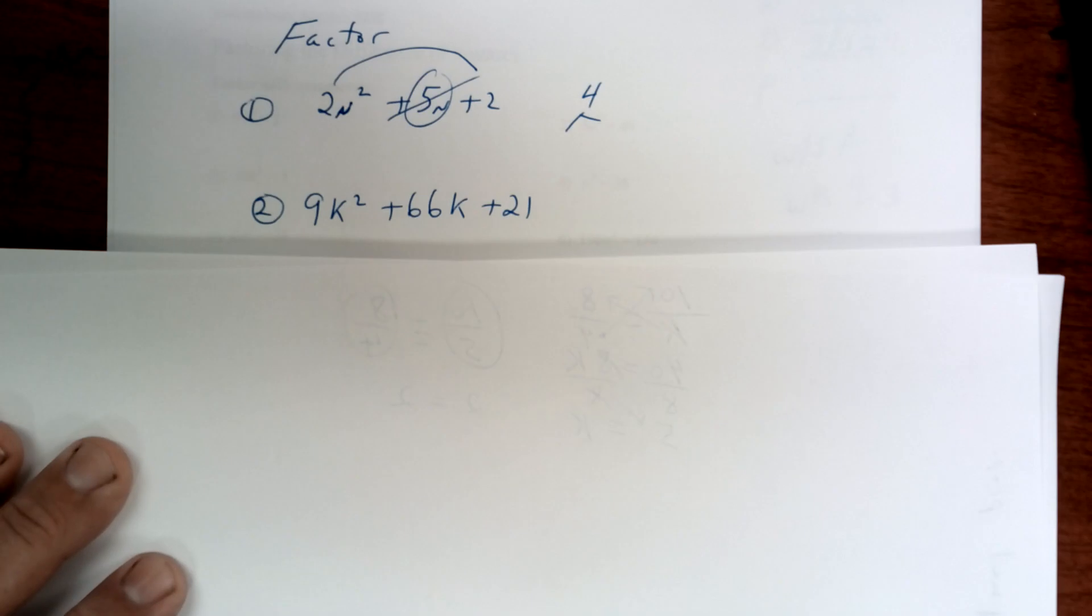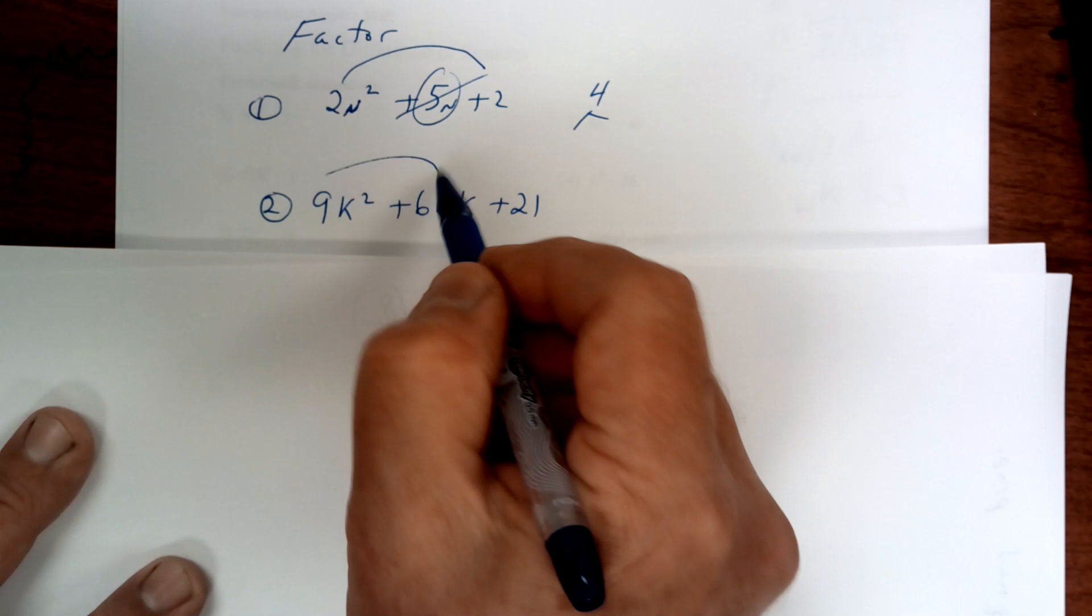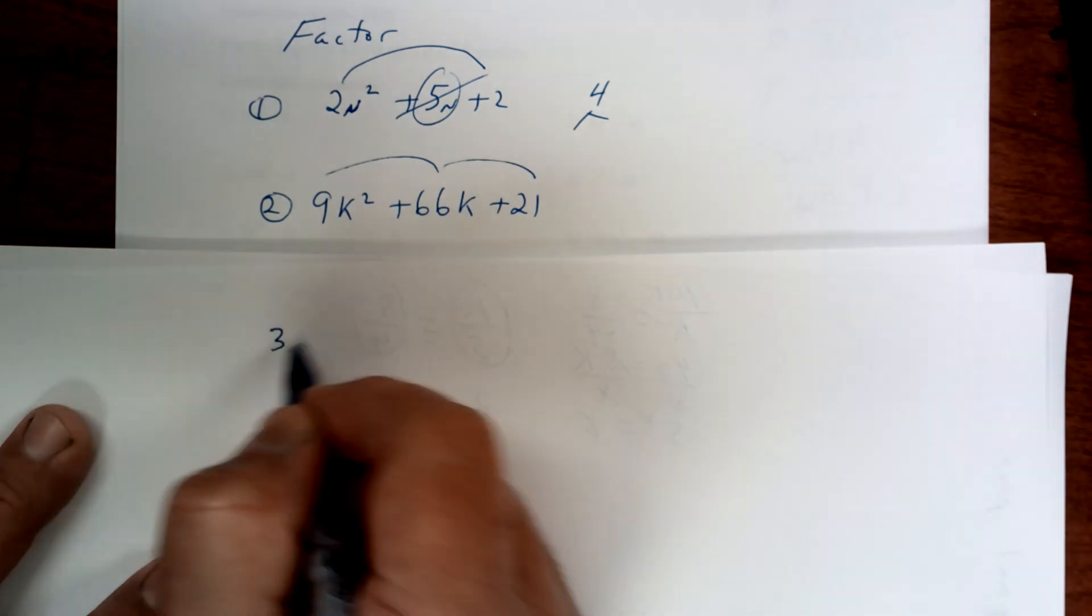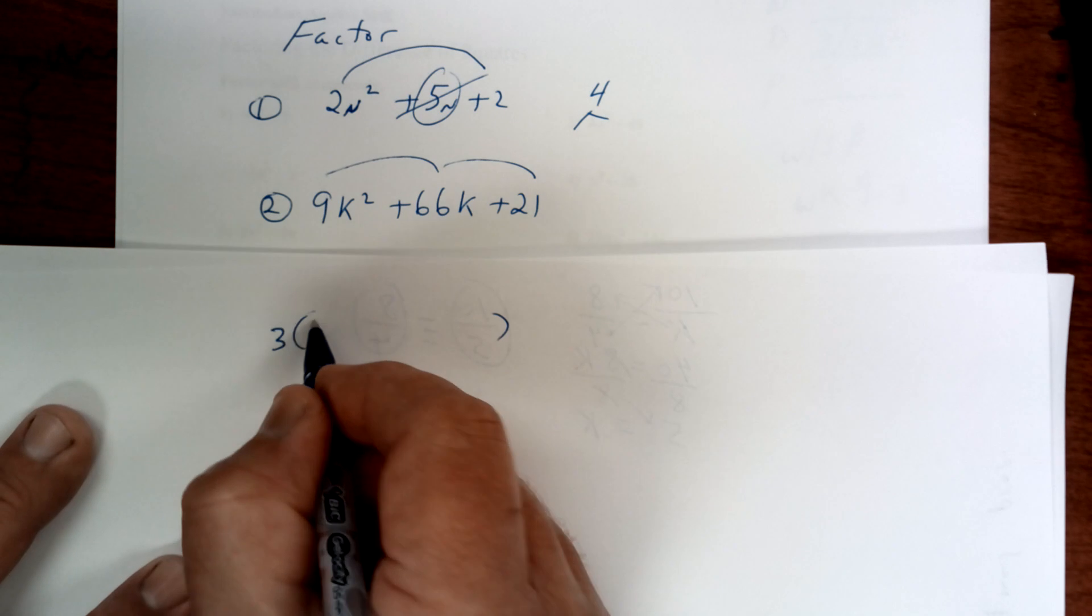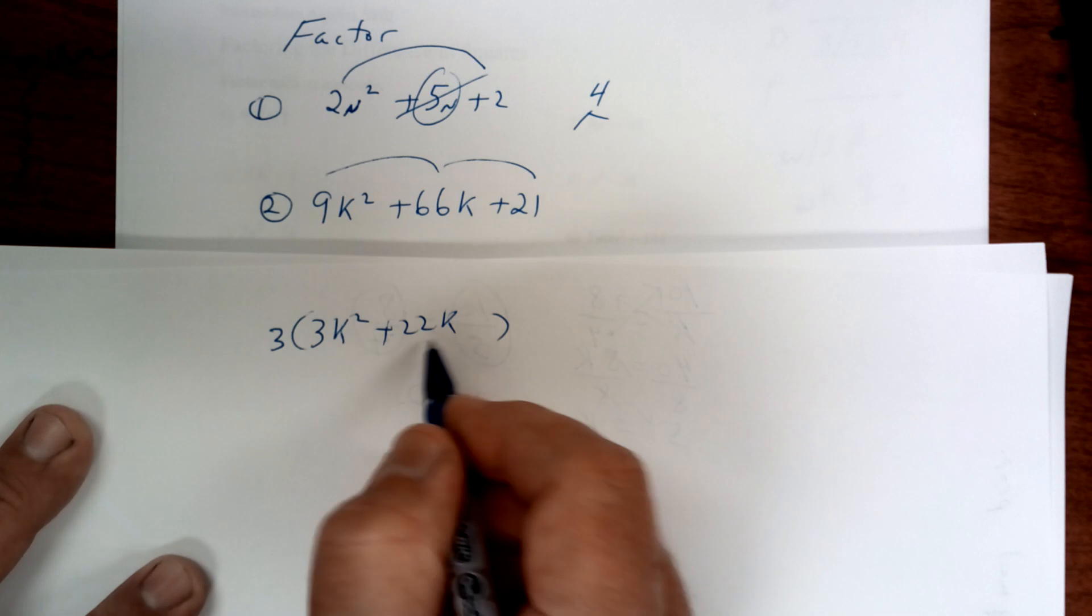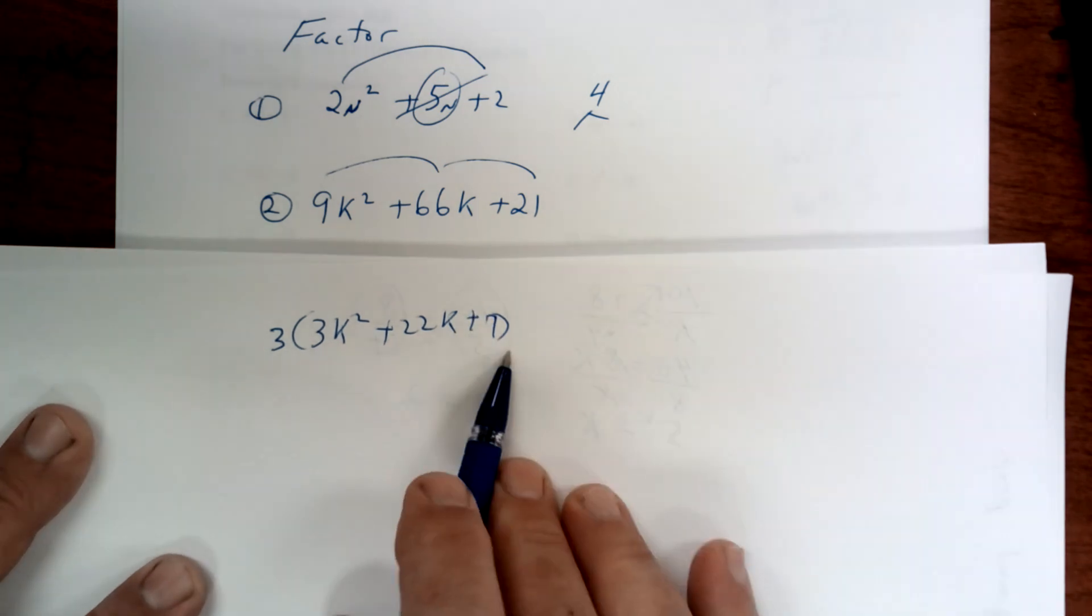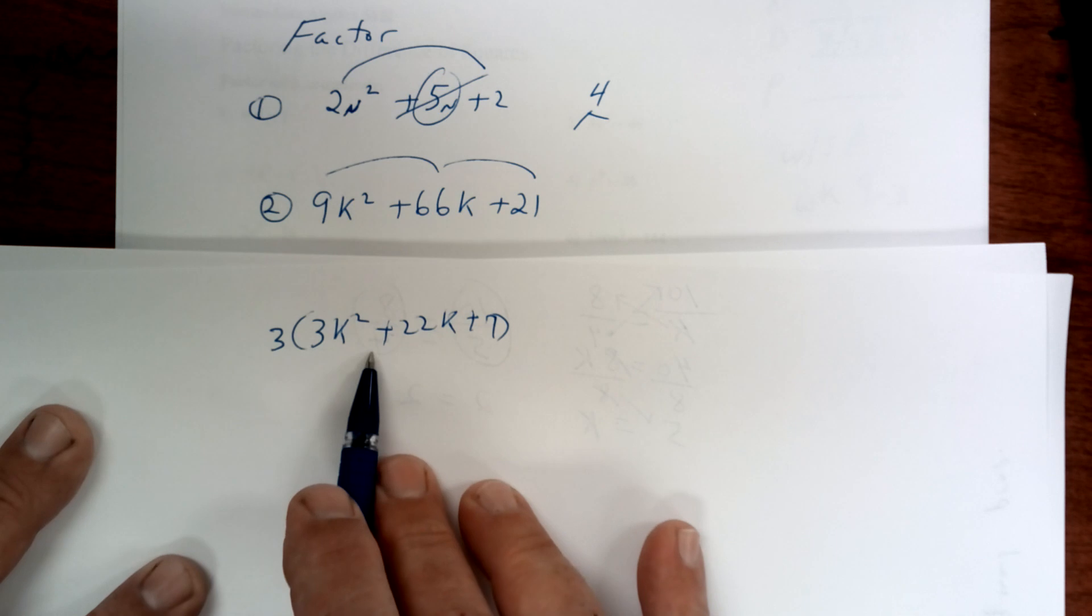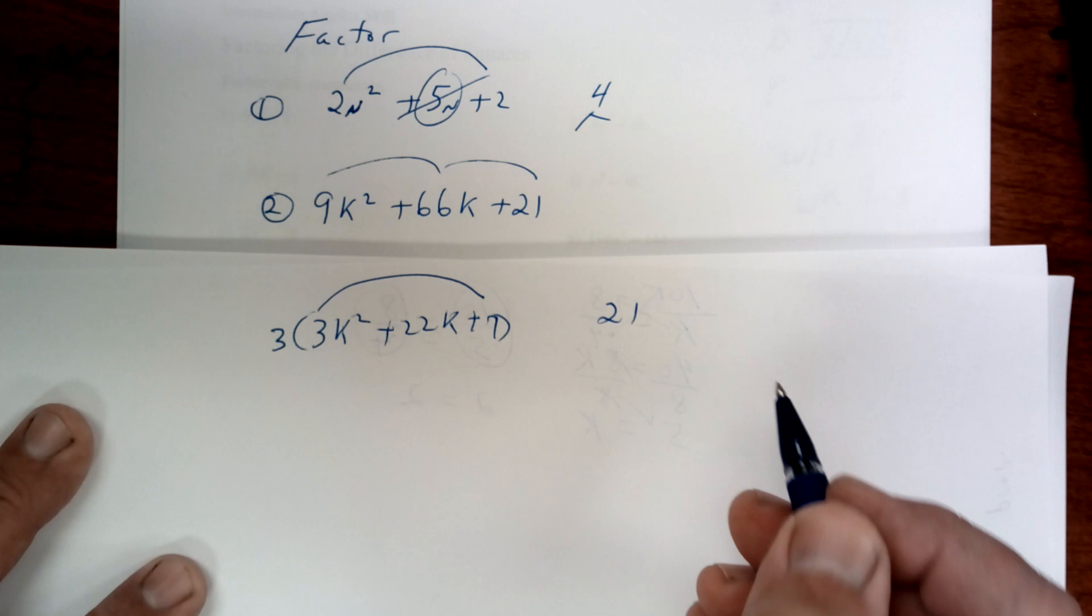On this one, you may be able to factor it the way it is, but you've got to take out what they have in common. They all have a 3, and if you fail to take that 3 out, you'll be wrong. So this is going to be 3(k² + 22k + 7). 7 times 3 is 21.